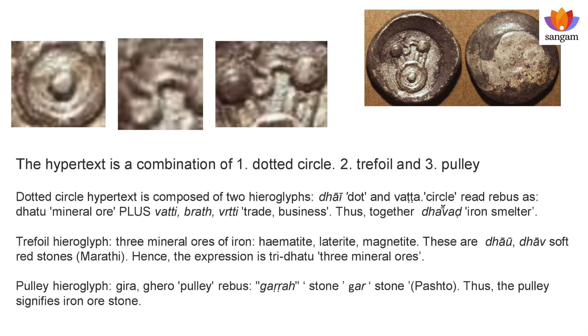Let us take a deeper look at the three hieroglyphs: dotted circle, trefoil, and pulley. The dotted circle is a hypertext of two hieroglyphs — a dot (dai) and a circle (vatta). The rebus reads as datu (mineral ore) plus vatti/vritti (trade and business), so together the dotted circle signifies iron smelter (davad, datu vritta). The trefoil hieroglyph refers to three mineral ores of iron: hematite, laterite, and magnetite — these are dhavu, soft red stones, hence three dhavu, three mineral ores. The pulley hieroglyph: ghero is a pulley, and garra means stone, so the pulley signifies iron ore stones of the Sahyadri ranges. Thus the Kuntala mint coin refers to the wealth resource of iron ore.